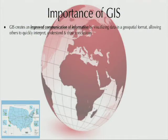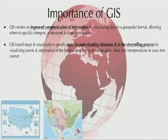GIS programs accomplish this by incorporating multiple layers which, when brought together, create a geospatial project and visualization. Within digital humanities, GIS plays an important role in research, visualization, and project development for students, staff, faculty, and researchers. First, GIS creates improved communication of information — statistical charts, spreadsheets, and raw data can now be visualized in a geospatial format that allows others outside specialized fields to interact with, interpret, and draw conclusions from. GIS-based maps and visualizations greatly assist in understanding situations and in the storytelling process, allowing viewers to visualize events in ways texts cannot.